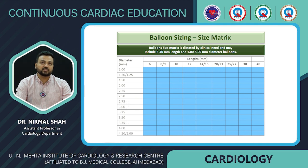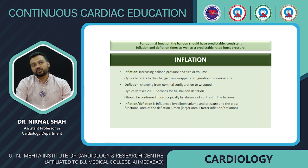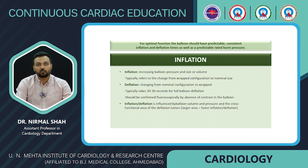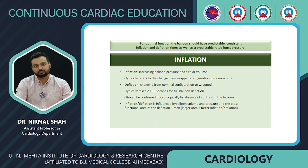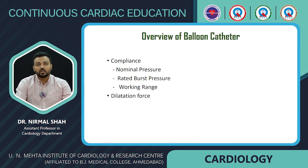Balloon sizing and size matrix are dictated by clinical needs. A wide range of lengths is available from 6 mm to 40 mm, and diameters from 1 mm to 5 mm. To optimize function, the balloon should have predictable consistent inflation and deflation times as well as a predictable rated burst pressure. Inflation refers to increasing the balloon pressure and size — from wrap configuration to nominal size. Deflation changes from nominal to wrap configuration, typically taking 20 to 30 seconds, and should be confirmed fluoroscopically by absence of contrast in the balloon.